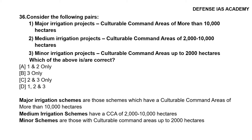Question 36: Consider the following pairs of irrigation project classifications: Major irrigation projects have culturable command areas of more than 10,000 hectares; medium irrigation projects have culturable command areas of 2,000 to 10,000 hectares; minor irrigation projects have culturable command areas up to 2,000 hectares. The correct answer is option D, all three — 1, 2 and 3 — are correct.